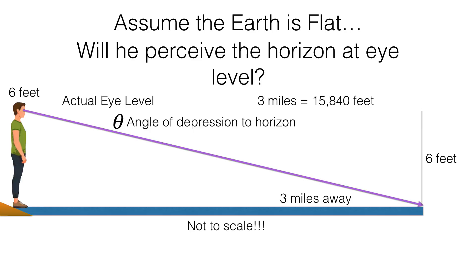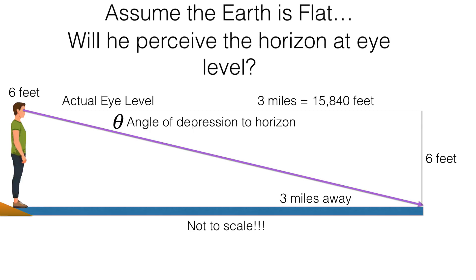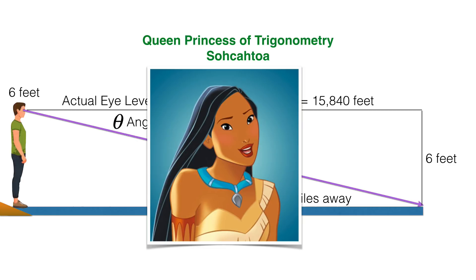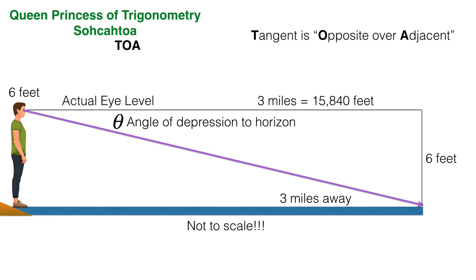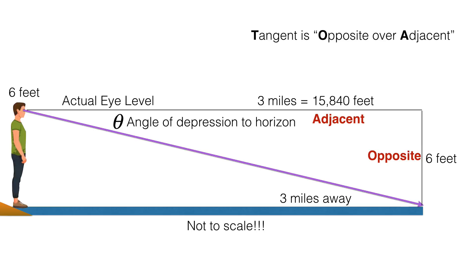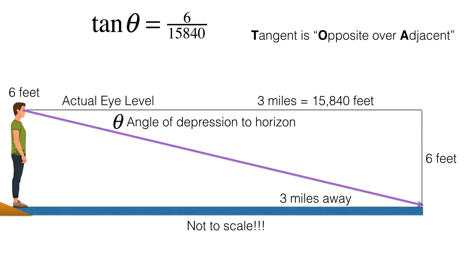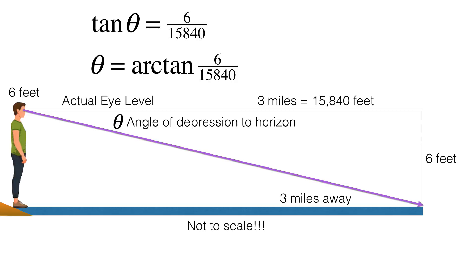So we have an angle of depression, meaning we're looking below eye level. To help us out, we have the queen princess of trigonometry, SOHCAHTOA. The TOA in her name stands for tangent is opposite over adjacent. There's the opposite and adjacent, and we plug that into the tangent formula and take the inverse tangent, or arc tangent. We calculate theta to be two hundredths of a degree.